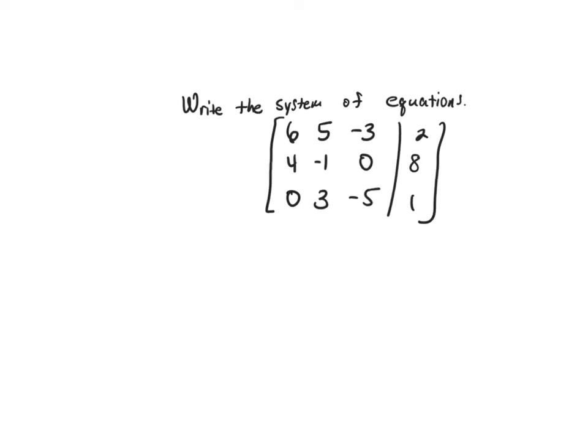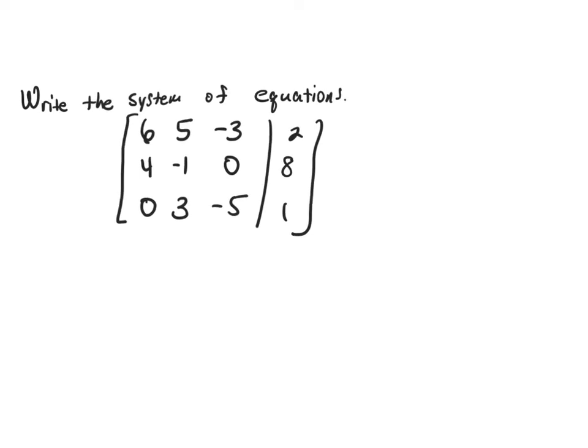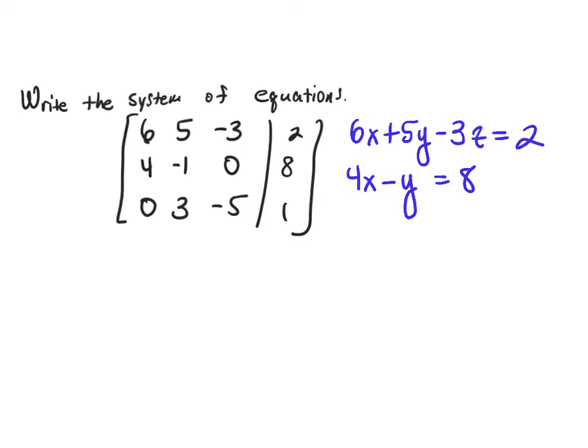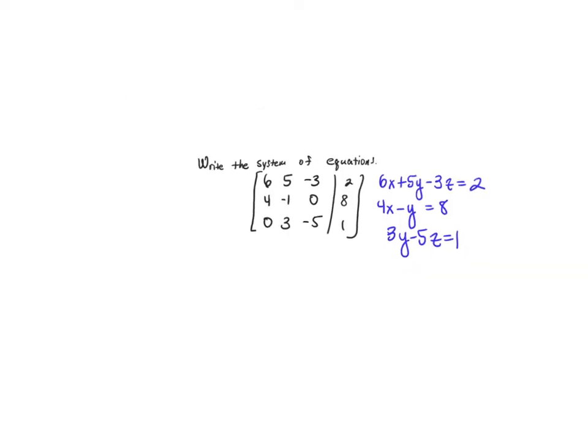Now write this one down — five questions. If I was going to write the system of equations from the matrix, the first row would be: six x plus five y minus three z equals two. Then: four x minus y equals eight — you can write zero z or leave the z column blank. And the last row: three y minus five z equals one. That's all they're asking — just recognize it.